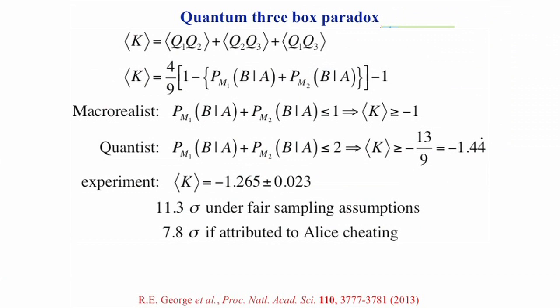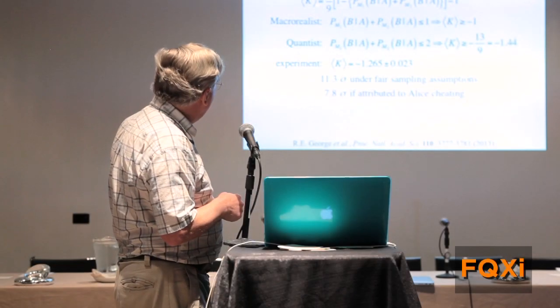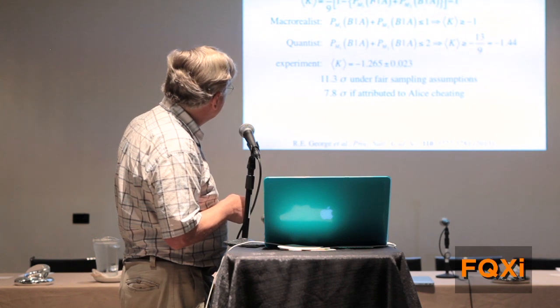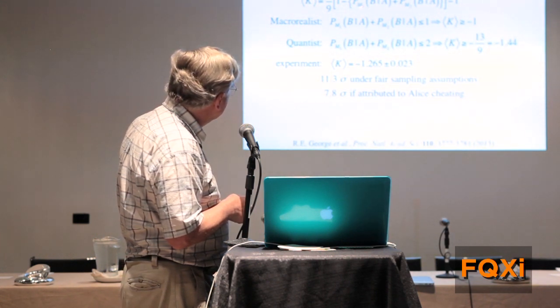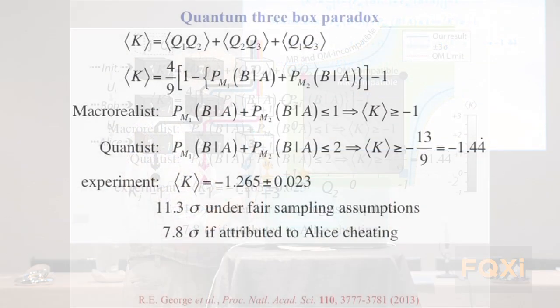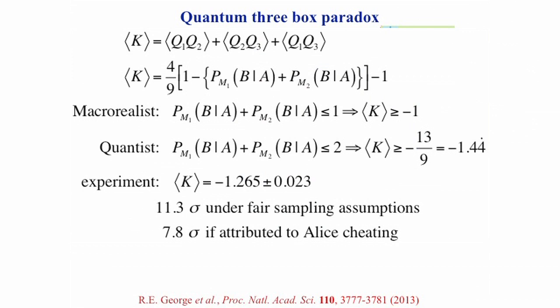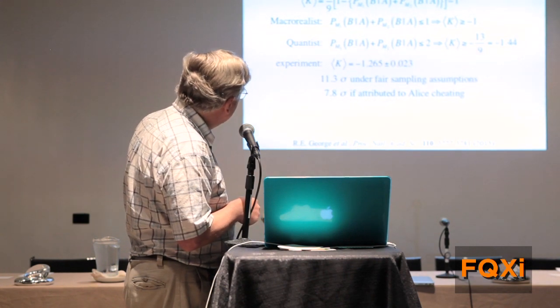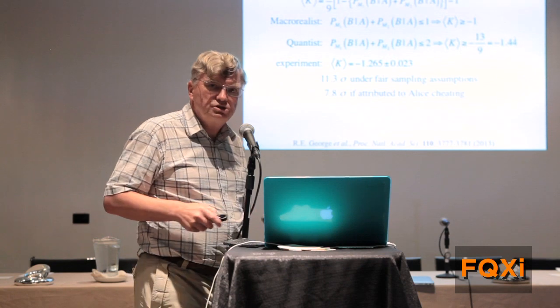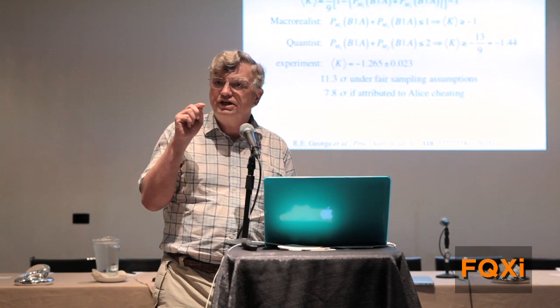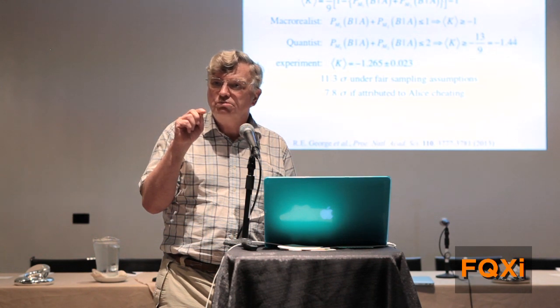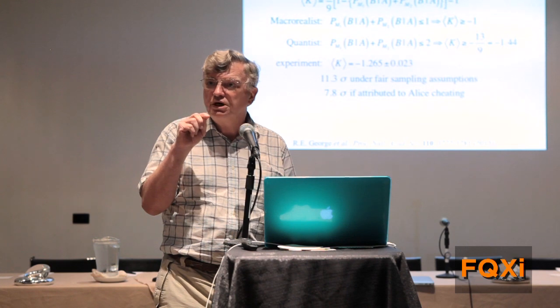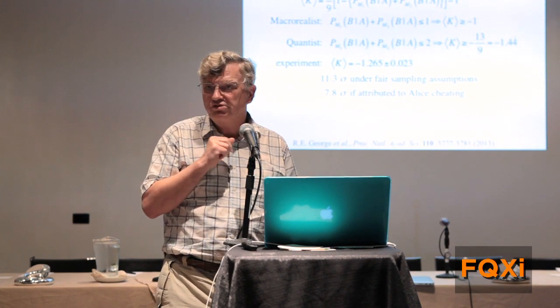You can analyze this in terms of the Leggett-Garg inequality. The value of K, a little bit of algebra will show you, is this function of the conditional probabilities of Bob, if he looked in box one, finding the ball conditional on Alice post-selecting the game. The key point is the difference between the sum of these functions between the classical macro realist, where the probability cannot exceed one, and the quantum theorist, for whom that probability must not exceed two, which gives you the rather interesting observation that had Bob looked in box three, perhaps by a weak measurement, he would have had a negative probability of one of finding the ball there.